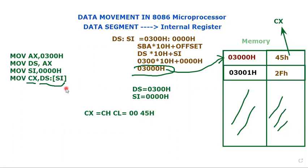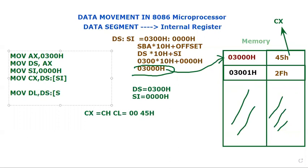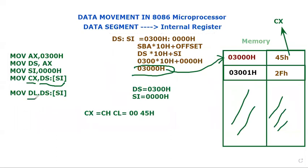We can also use an 8-bit register. For example: MOV DL, DS:[SI]. Since DL is an 8-bit register, there is no concern about high and low bytes. After execution, DL becomes 45h — 8 bits of information going directly into an 8-bit register. I hope this clarifies the concept. If you have any queries or confusion, please post them in the comment section. Thank you for listening.